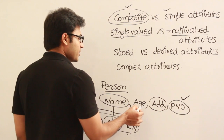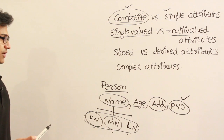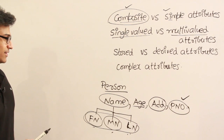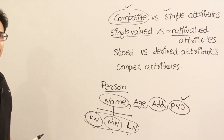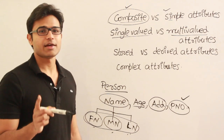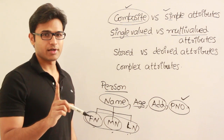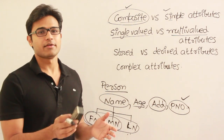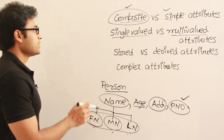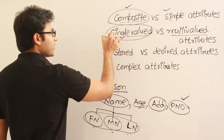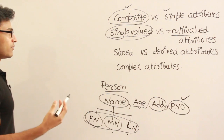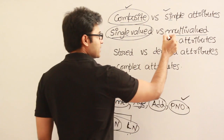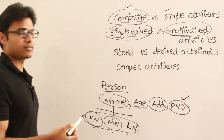Age, however, cannot be a multi-valued attribute. At any point in time, a person will have only one age. Age is a single-valued attribute — it has to be only one value. You cannot say you are both 10 years old and 100 years old at the same time. Single-valued means we assign only one value to such an attribute and never more than one. Multi-valued means the attribute can take more than one value at the same time.